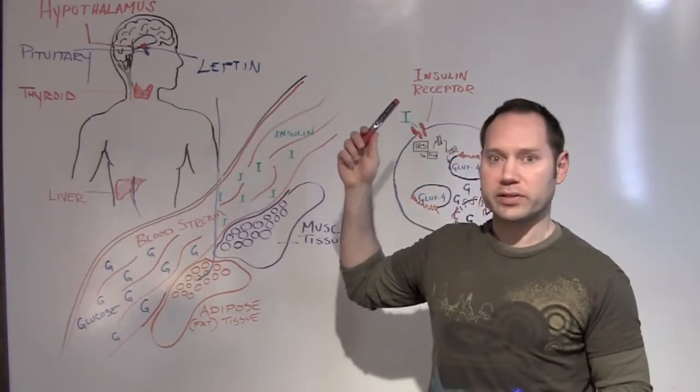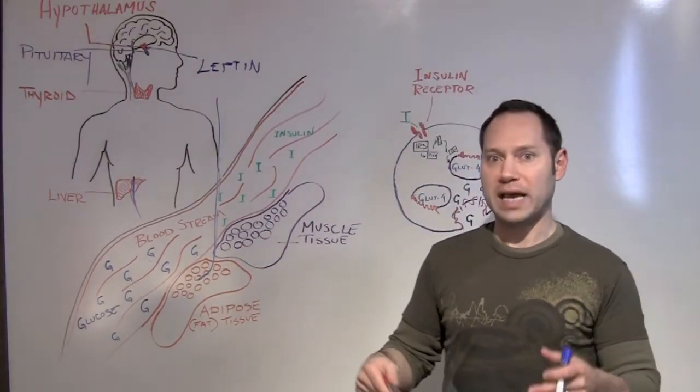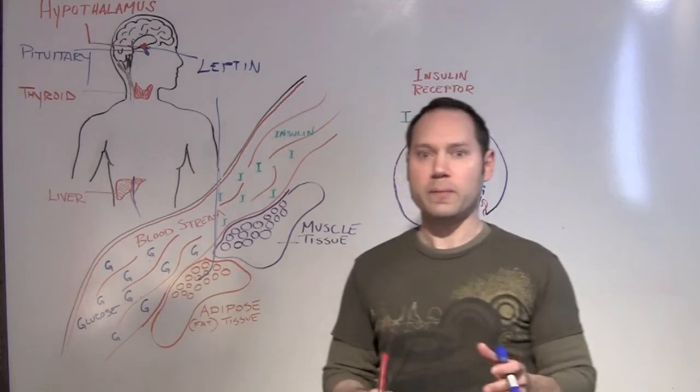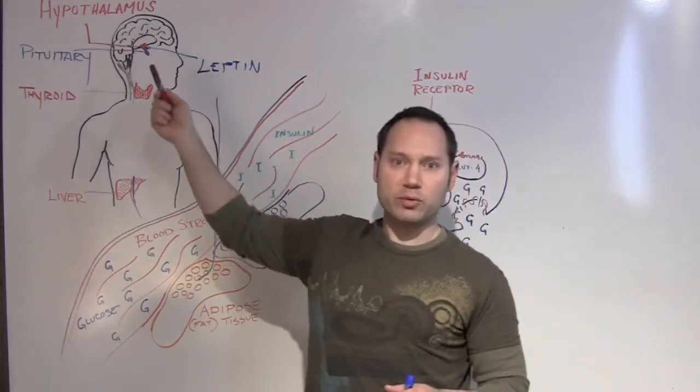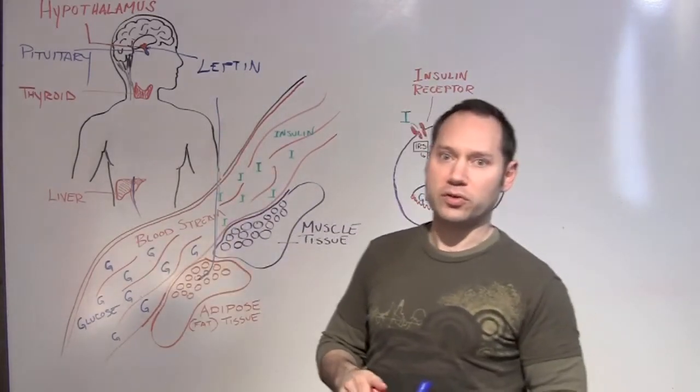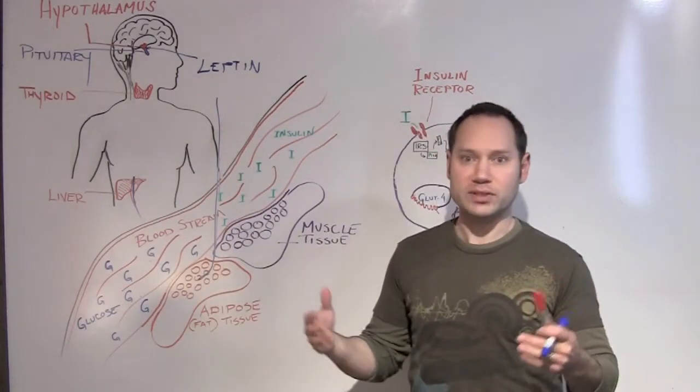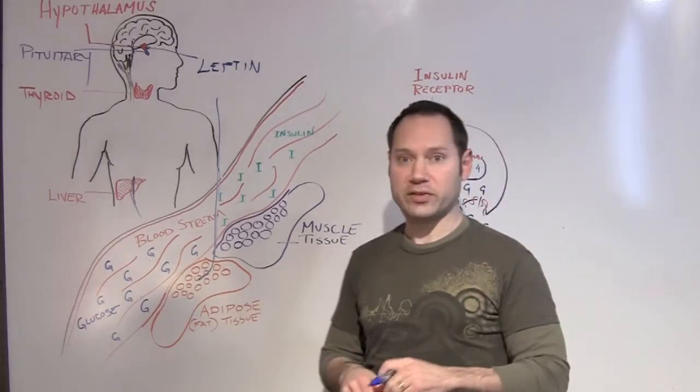Another one is, again, what I talked about with insulin. If there's too much of a hormone, the receptor for that hormone will downregulate in order to keep things balanced. So again, it's like leptin will be knocking on the door, but the hypothalamus, the cells, don't answer that, because there's just too much leptin, and so that's how the body regulates things like that.